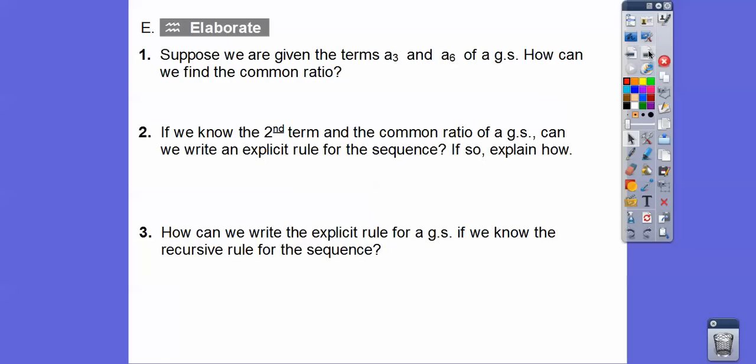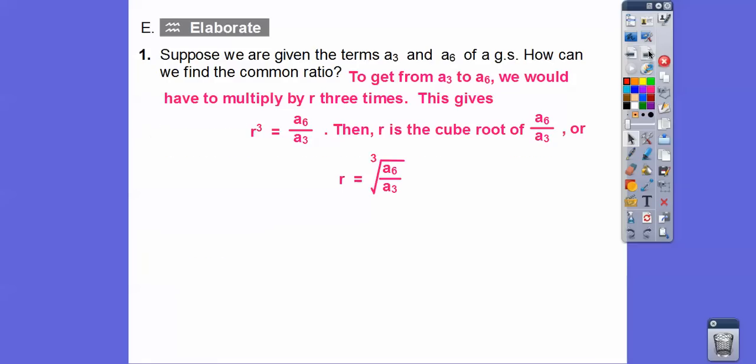So here's a series of questions. And we'll stop here, you guys. So suppose we're given the terms, the third term and the sixth term of a geometric sequence. How could we find a common ratio? Well, to get from the third to the sixth term, we'd have to multiply by r three times. And so r times r times r is r cubed. So r cubed would be righty divided by lefty.